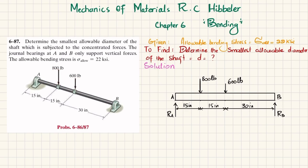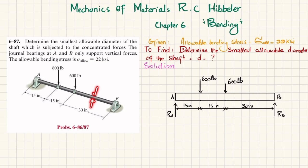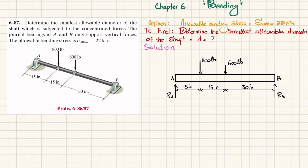So this is the shaft where there are concentrated loads of 800 pounds and 600 pounds. At point A we have a general bearing, and at point B we have a general bearing as well, that only exert vertical reaction forces on this shaft. The allowable bending stress for the shaft is 22 ksi, and you have to find the diameter d of this shaft. Let's start with the solution.